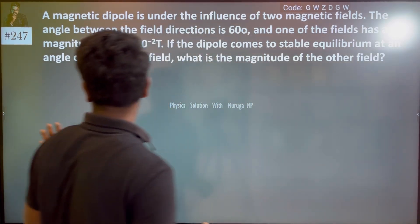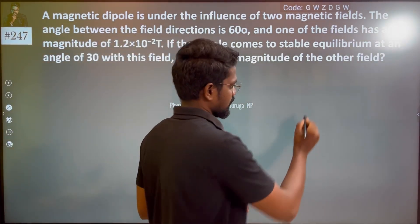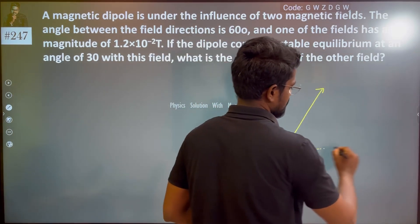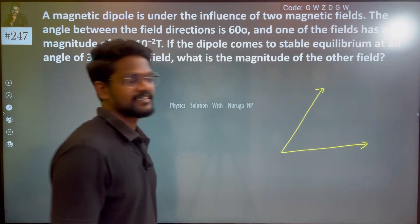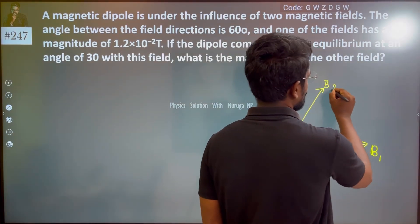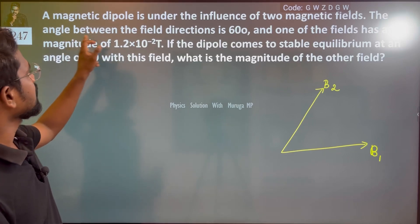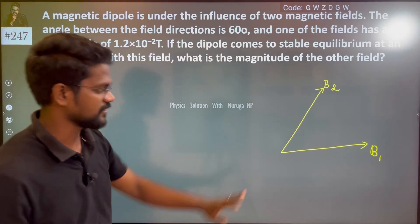So we have two magnetic fields and a dipole. Let us consider these magnetic fields. We have B1 and B2 magnetic field directions. The angle between the field directions is 60 degrees.